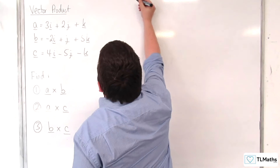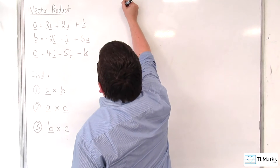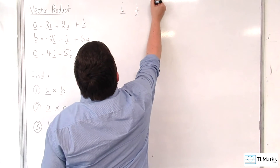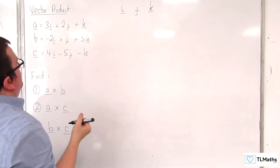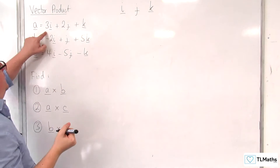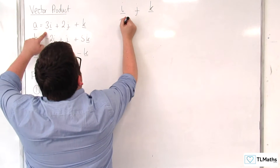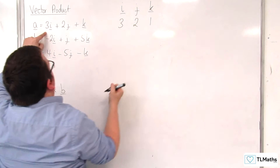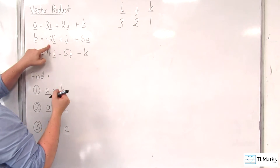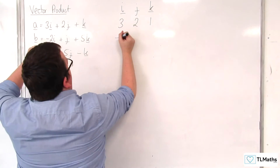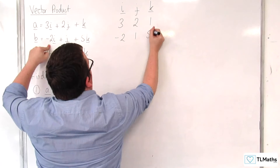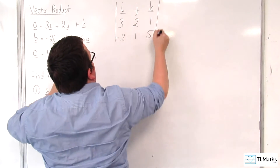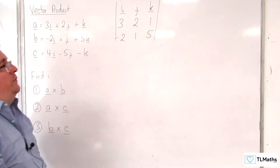The way that we do this is we look at a matrix with I, J, K in the top row. A goes in the middle row: 3, 2, 1. And then B goes in the bottom row: minus 2, 1, 5. And we find the determinant of that matrix.